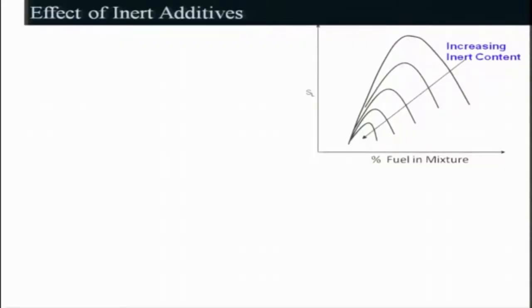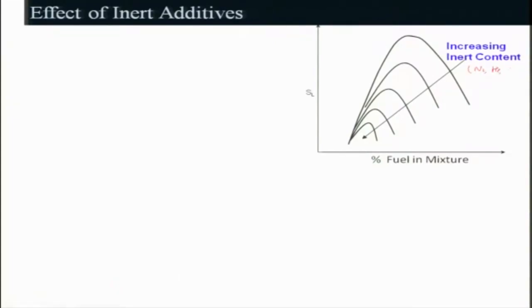Today we will be looking at the effect of inert additives, or the dilution, on the laminar burning velocity. Here I have plotted the laminar burning velocity versus the percentage of fuel in mixtures. The arrow indicates increasing inert content — inert content means any gas acting as an inert, for example nitrogen, helium, or argon.